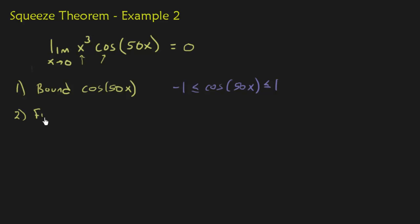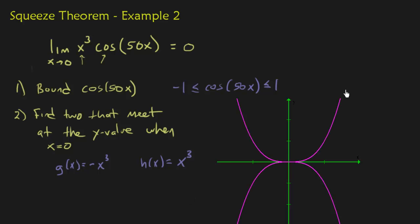Second is that you need to find two functions, specifically functions that are showing up in your limit. So find two functions that meet at the same place, the same y value when x equals 0. I already talked about what cosine does. It's always between negative 1 and 1. But notice that we have this x cubed here. So if I were to say let g of x equal negative x cubed, and then h of x equals positive x cubed. Let's go ahead and graph that. So there is h of x up here and then g of x is down here.